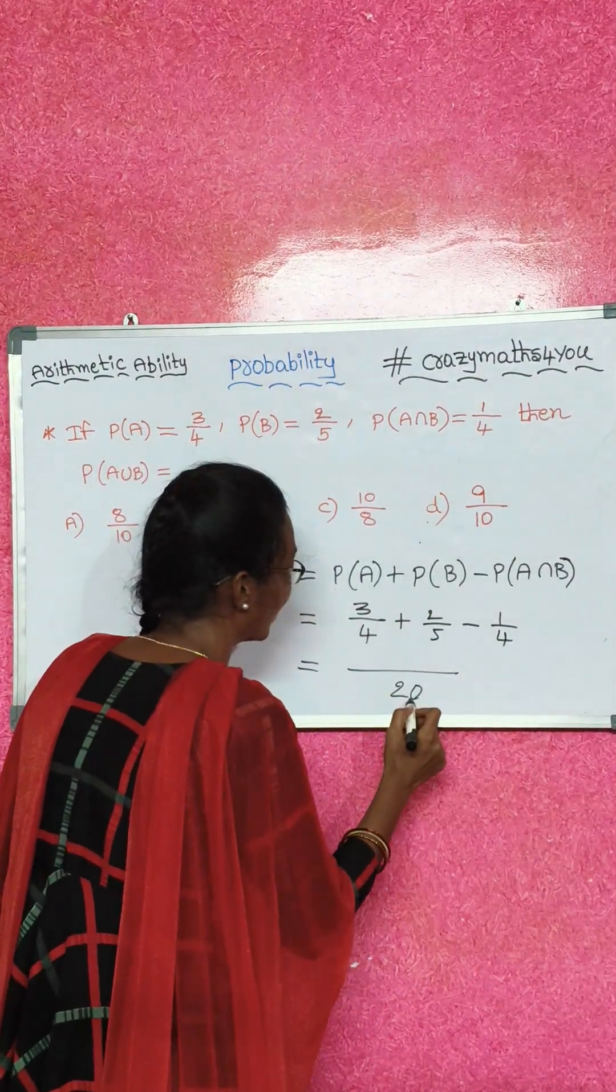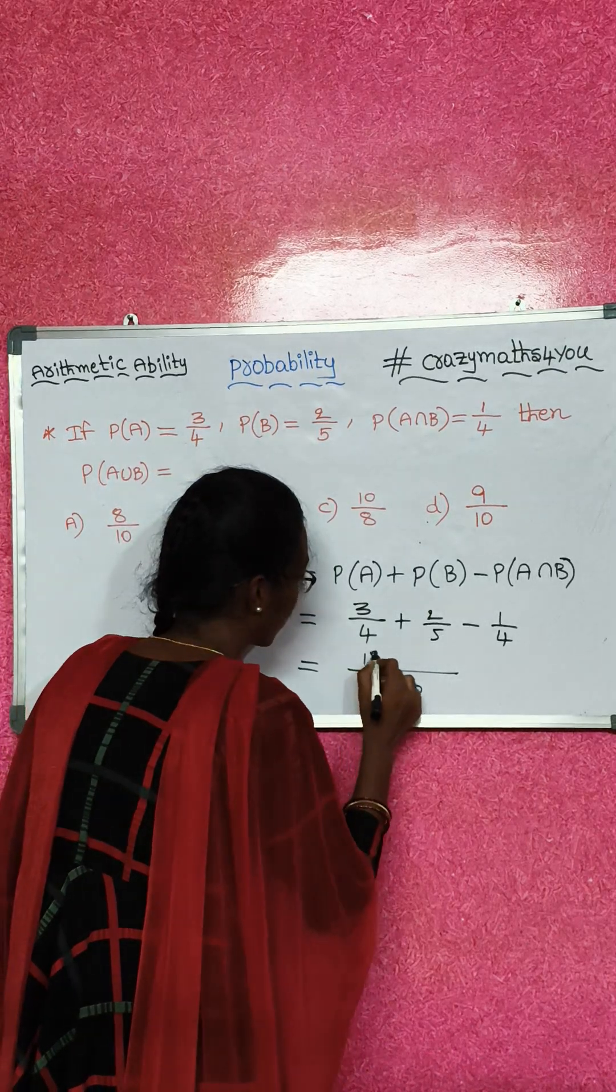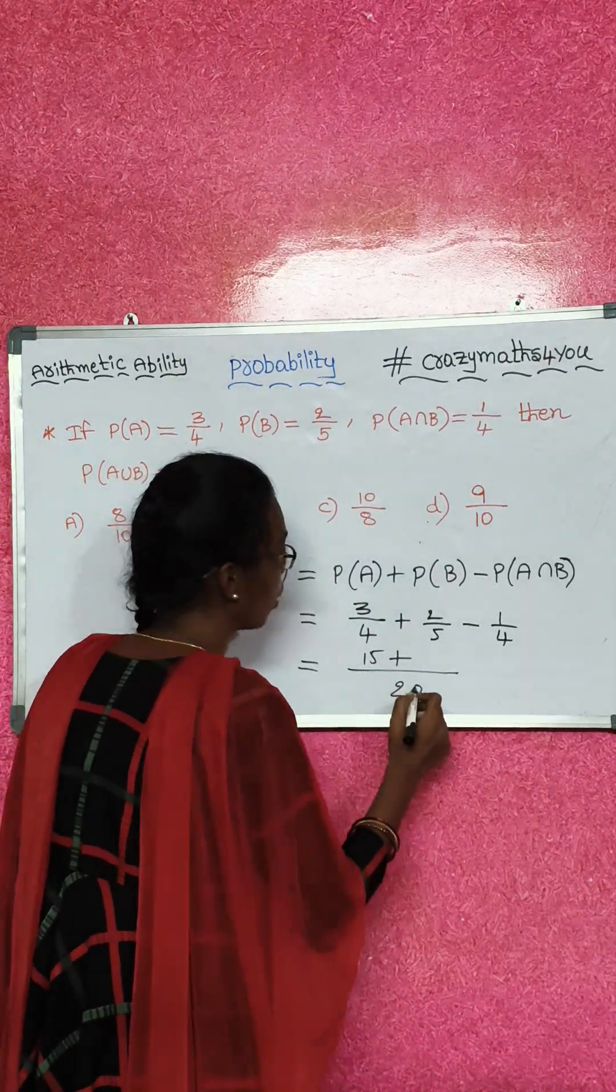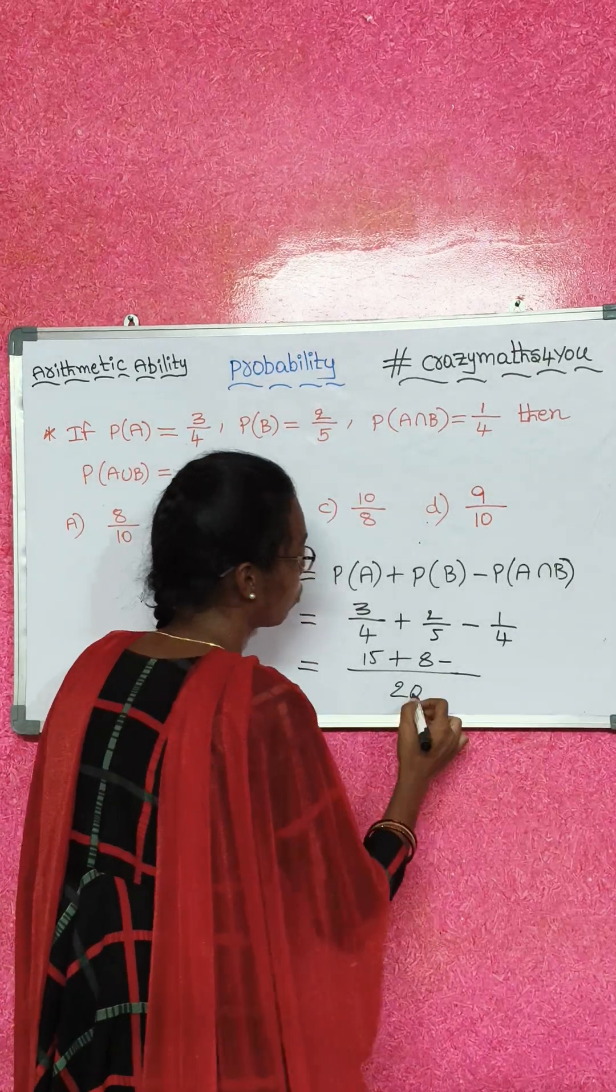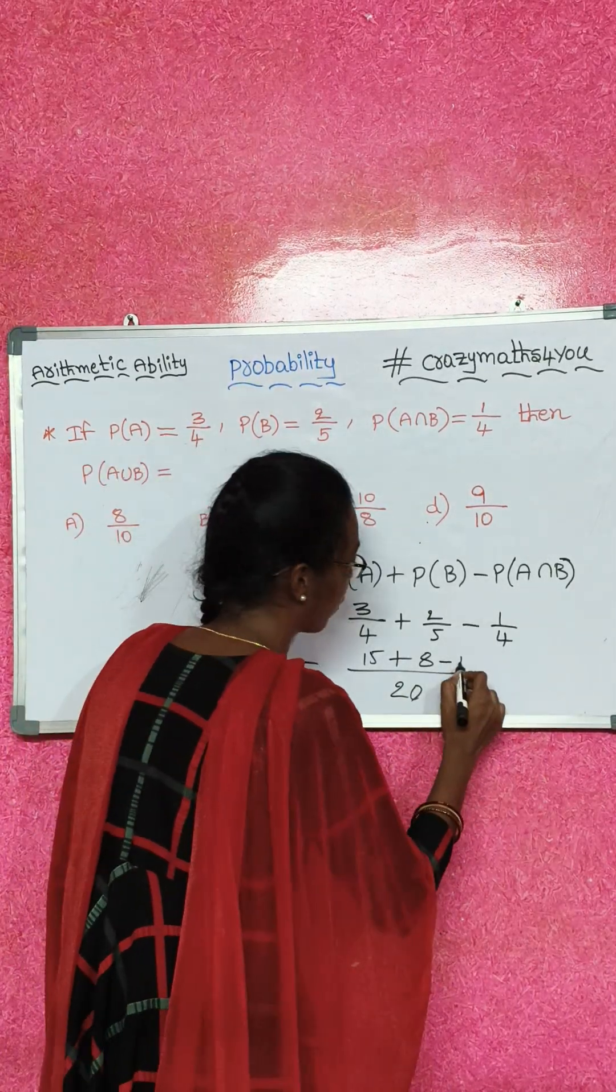Now 4 into 20, how many times? 5 times 3 equals 15. Plus, 5 into 20, 4 times, 4 into 2 equals 8. Minus 4 into 20, 5 times, 5 into 1 equals 5.